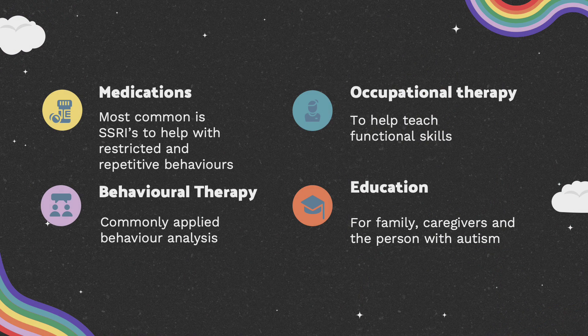Intervention options for autism are similar to OCD. They can include medications like SSRIs, behavioral therapies like applied behavior analysis, occupational therapies to help develop functional skills, and education for family members, caregivers, and the person with autism.